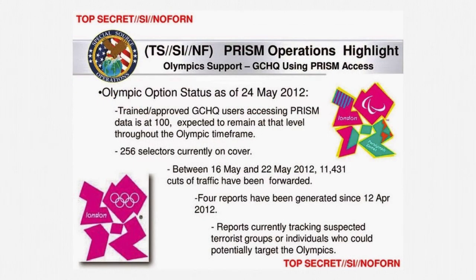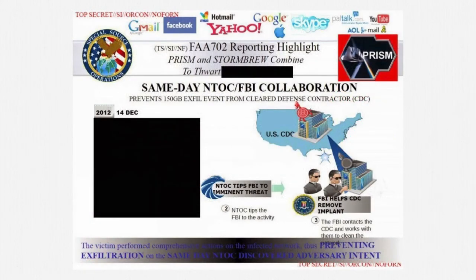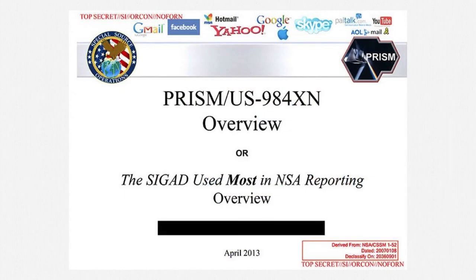During the Olympics, the NSA increased British intelligence access to PRISM for purposes of protecting the games. And on at least one occasion, PRISM mitigated a data breach at a defense contractor. There's no doubt that PRISM has been an incredibly successful intelligence program — it's the NSA's most used source for its intelligence reports, including the President's Daily Briefing. Both the President's Intelligence Review Group and the Privacy and Civil Liberties Oversight Board concluded that PRISM has been a very productive program.